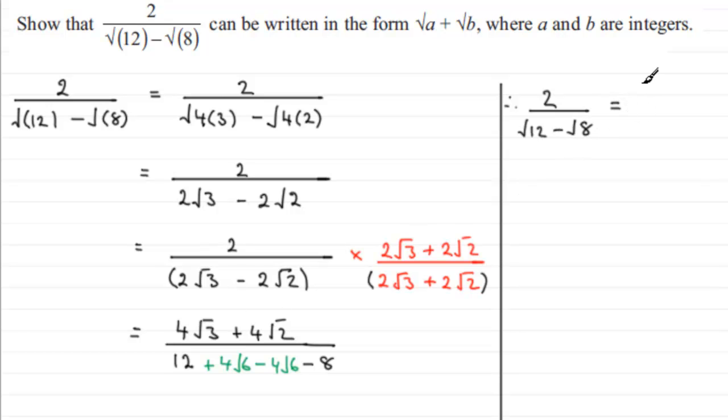So we therefore have 2 over root 12 minus root 8 equals... Well, on the top we've got 4 as a common factor, so we've just got √3 + √2 in there. On the bottom we've got 12 take away 8, which is 4. Can you see, these two 4s cancel one another out, leaving us with just simply √3 + √2.